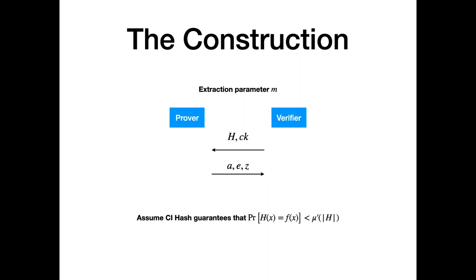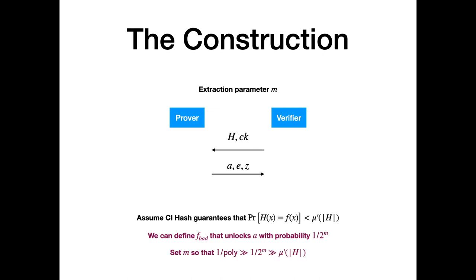Plugging this back into our construction: assume the correlation intractable hash function guarantees a negligible advantage of mu-prime. With the new extractable commitment scheme, we define an f that unlocks the commitments in A with probability approximately 1 over 2^m. If we set m so that 1 over 2^m is negligible but still much bigger than mu-prime, we achieve soundness. The first message of this commitment scheme is also pseudorandom, like the hash function, so we get public coin as well. And now, finally, we get statistical WI.